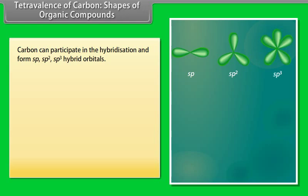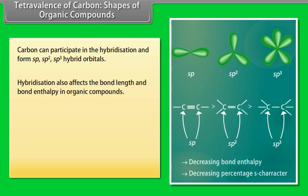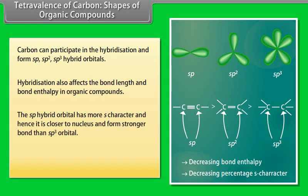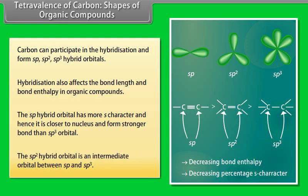Carbon can participate in hybridization and form sp, sp2, and sp3 hybrid orbitals. Hybridization also affects the bond length and bond enthalpy in organic compounds. The sp hybrid orbital has more s-character and hence is closer to the nucleus and forms a stronger bond than the sp3 orbital. The sp2 hybrid orbital is an intermediate orbital between sp and sp3.